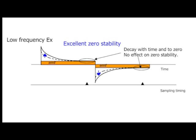In the low frequency excitation method, the coil excitation frequency is low, allowing the induced noise to decay with time and decrease to zero where it is sampled. By sampling the portion of the signal where induced noise doesn't exist, the induced noise can be canceled even if the waveform changes. Thus, low frequency excitation can maintain excellent zero stability.